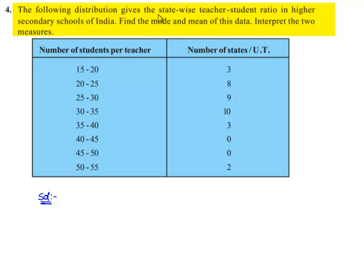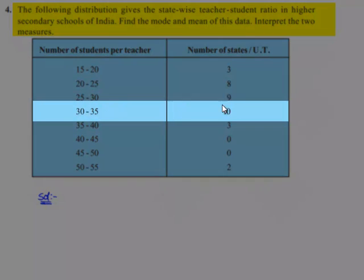They have asked us to find the mode and the mean. As we know, the mode is the observation having the maximum frequency. The maximum frequency is 10 and the corresponding modal class is 30-35.